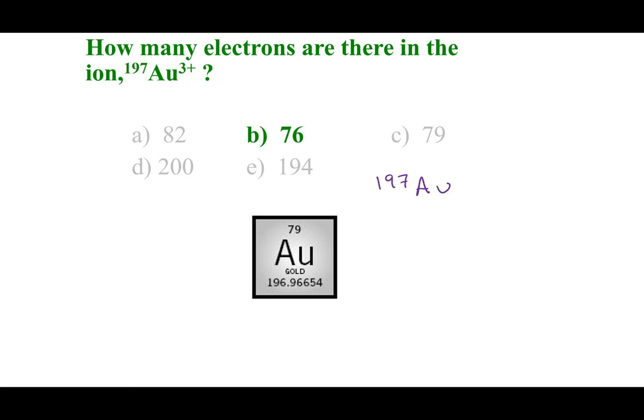If I look on the periodic table, gold is element 79. And so, remember, this is the neutral gold. So, neutral gold, that means gold without a charge, has 79 protons and 79 electrons.